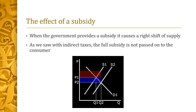When the government provides a subsidy, it causes a right shift of supply. As we saw with indirect taxes, the full subsidy is not passed on to the consumer. Below, you can see that the consumer benefit is shown in blue and the producer benefit shown in red.